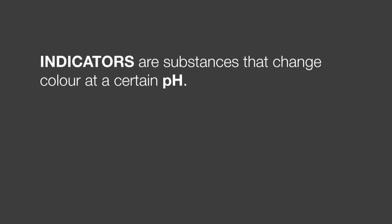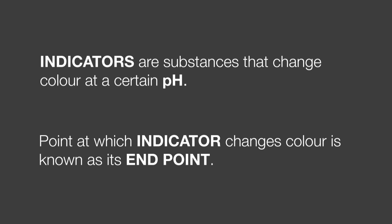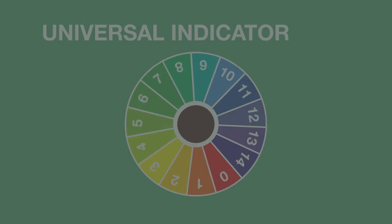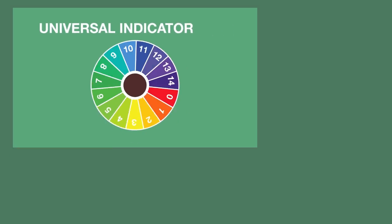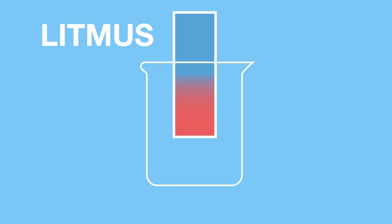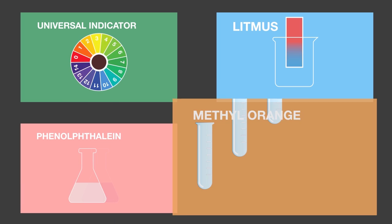In conclusion, indicators are substances that change color at a certain pH. The point at which an indicator changes color is known as its endpoint, which can be at any pH. Common indicators that you will encounter are universal indicator, litmus in the form of litmus paper, phenolphthalein, and methyl orange.